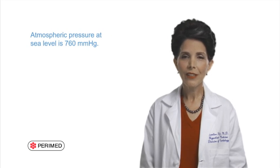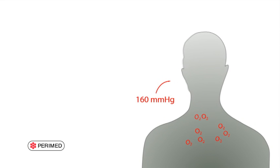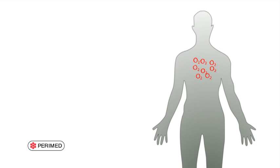First, let's briefly review just what it is we are measuring. My home in Houston, Texas, and here in Stockholm, where we are making this video, are exactly at sea level, where the total atmospheric pressure is 760 millimeters of mercury. Since 21% of that is oxygen, the inspired partial pressure of oxygen is 160 millimeters of mercury. This is diluted in the lungs with water vapor and carbon dioxide, so that if we were to measure the oxygen partial pressure in the arterial blood, it would be approximately 100 millimeters of mercury.